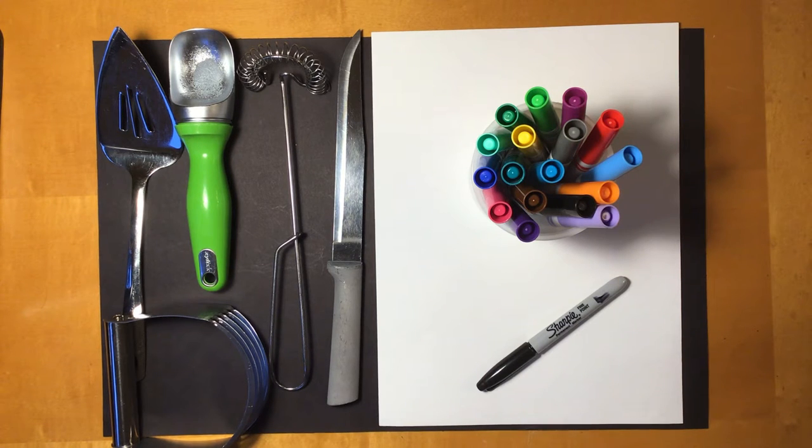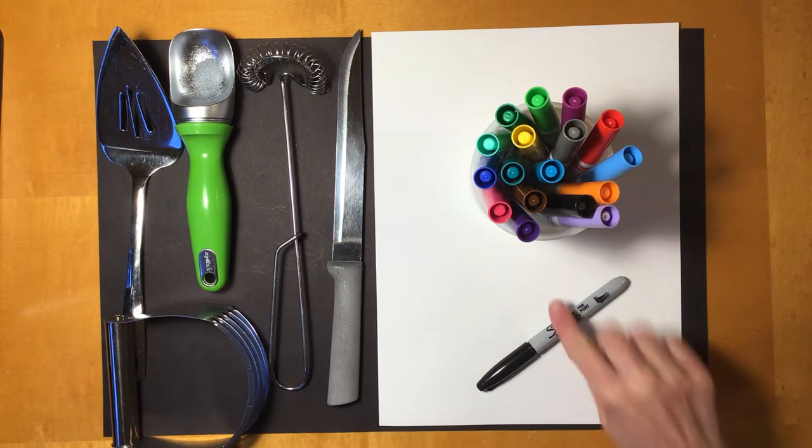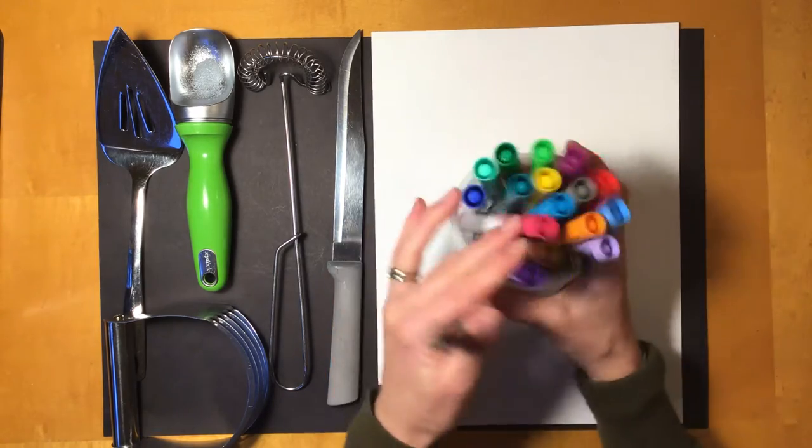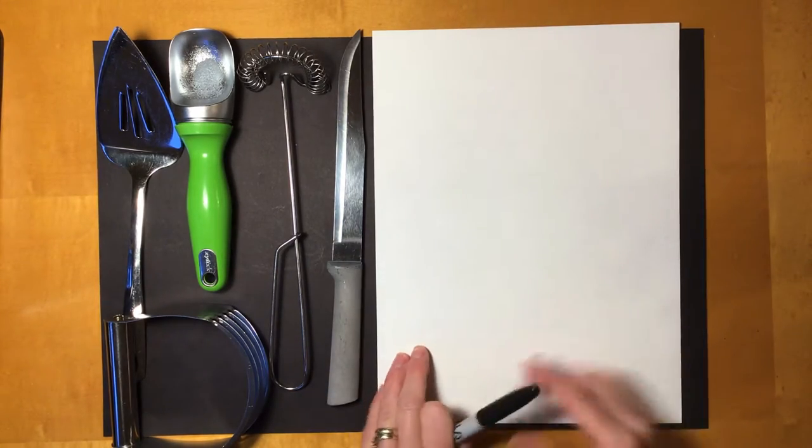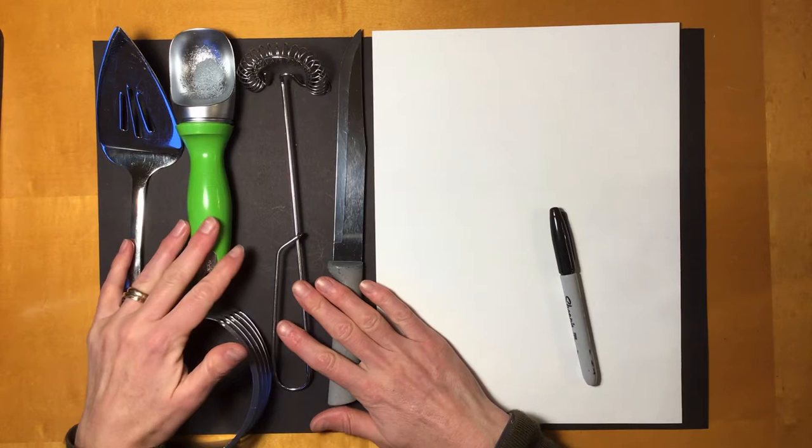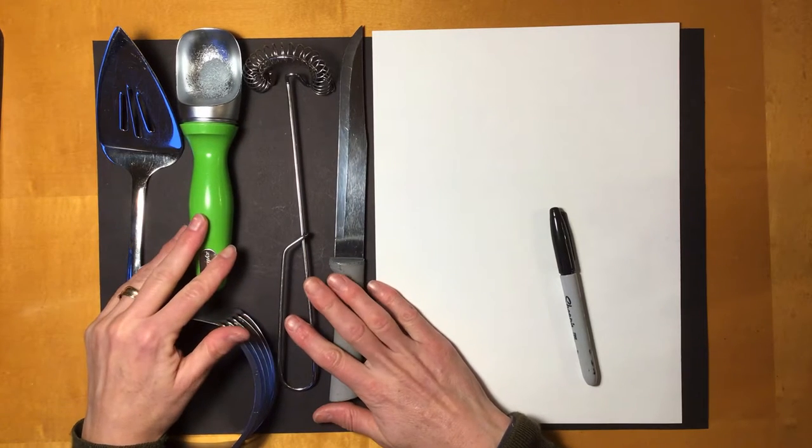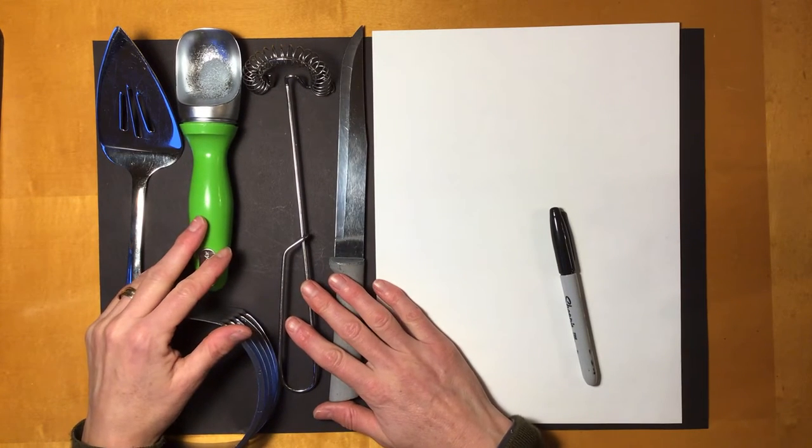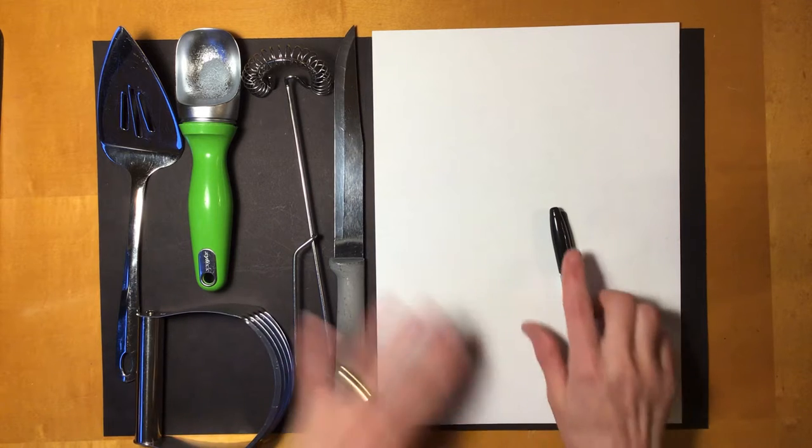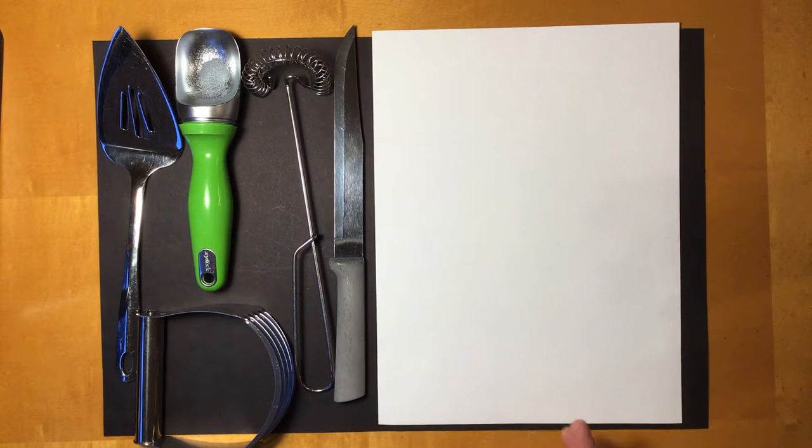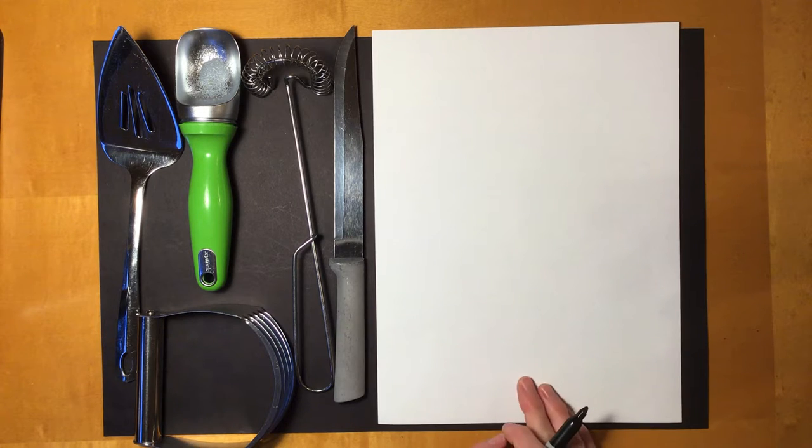Hello, I'm so glad you're here today to draw with me. You'll want to get your Sharpie marker, some colorful markers, your paper out, and then you're going to pick some kitchen utensils to draw in honor of Thanksgiving this week. I've picked some different utensils that stand for some of my favorite foods. So pause the video if you need to grab your materials.